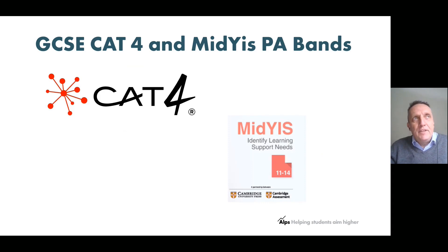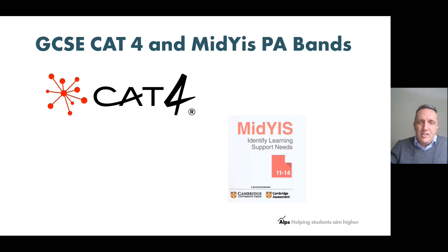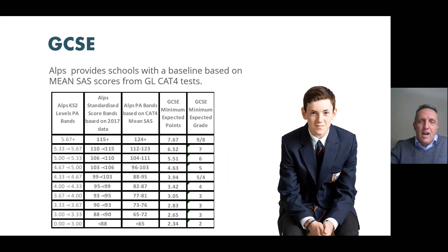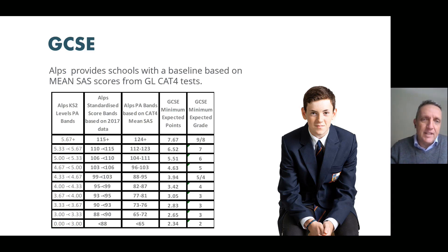From a GCSE perspective, in the UK we work with scaled scores from primary schools. However, with international schools we work with one of two data sets: either the CAT4 data from the GL assessment suite, or similar data from the CAMidges tests. From either of these, we're able to generate a minimum expected grade based on the prior attainment band that students are placed into.